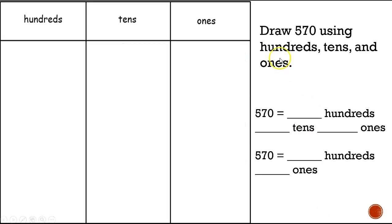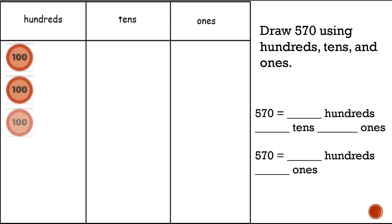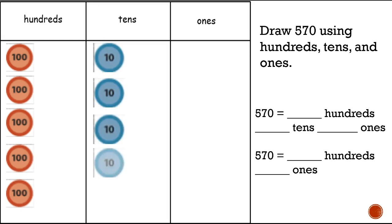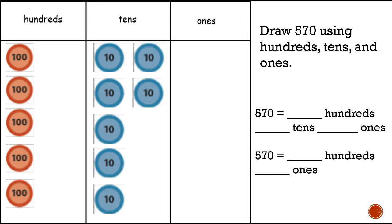Draw five hundred and seventy and fill out your chart. I put one, two, three, four, five hundreds, and one, two, three, four, five, six, seven tens. I didn't put any ones because there aren't any.